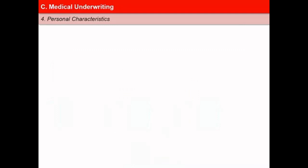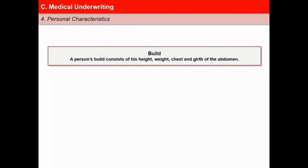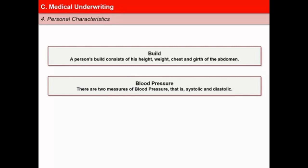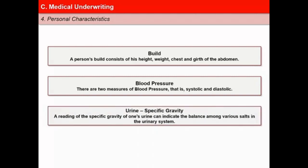Let us now learn about some personal characteristics considered under medical underwriting. First is build — a person's build consists of height, weight, chest and girth of the abdomen. For a given age and height, there is a standard weight with respect to which a person is defined as overweight or underweight. Second is blood pressure, which has two measures — systolic and diastolic. And third is urine specific gravity — a reading of the specific gravity of one's urine can indicate the balance among variables in the urinary system, which is useful in diagnosing any malfunctioning of the system.